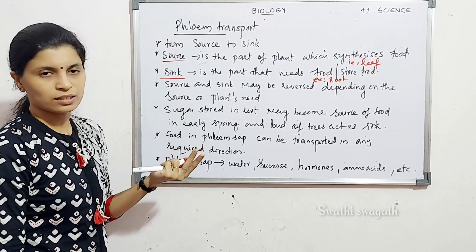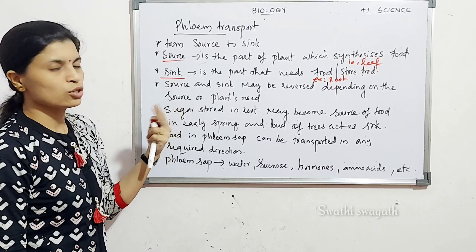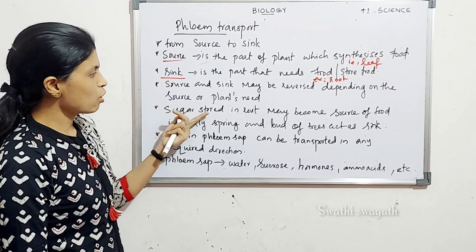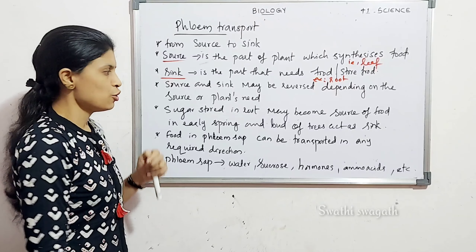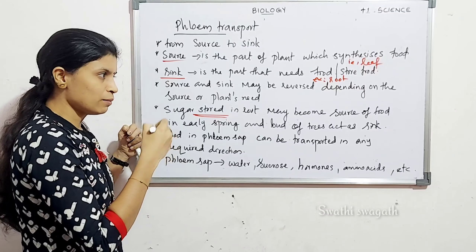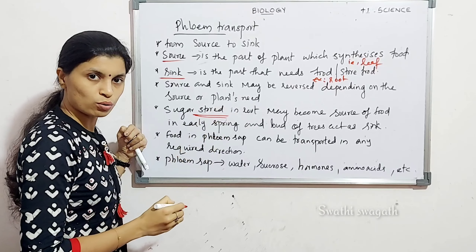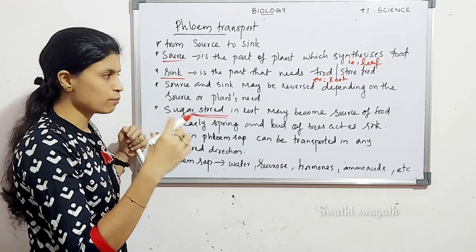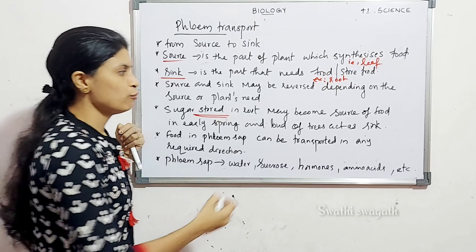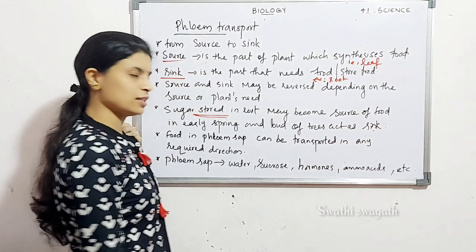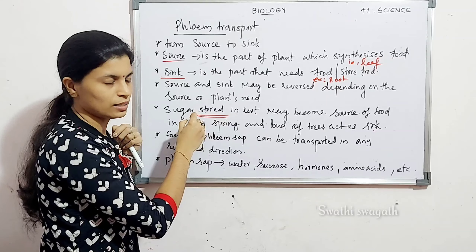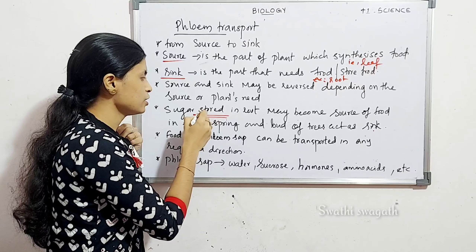What do we mean by the source being reversed? For example, sugar stored in the root may become a source of food. Normally, the root is part of the sink, but it may become a source of food. And the bud of a tree acts as a sink — so normally stored food is part of the sink.